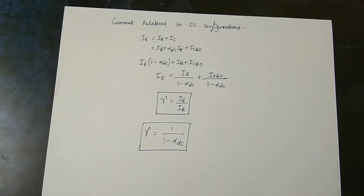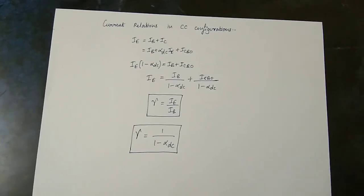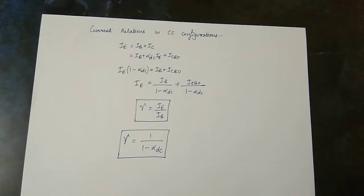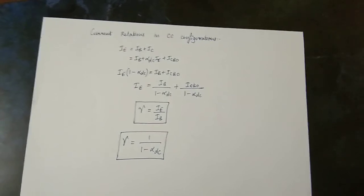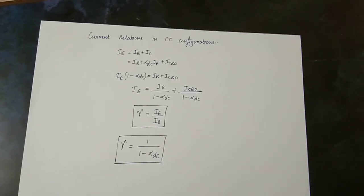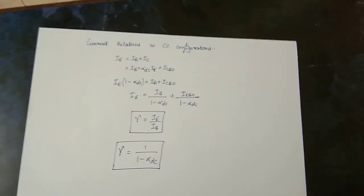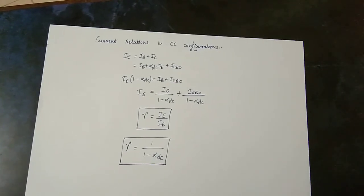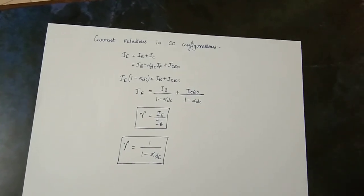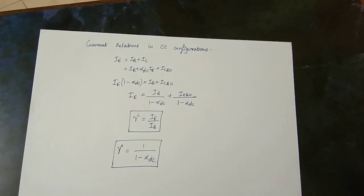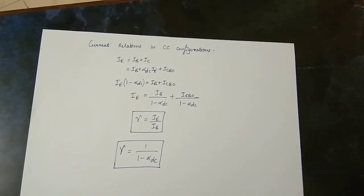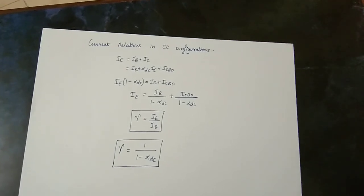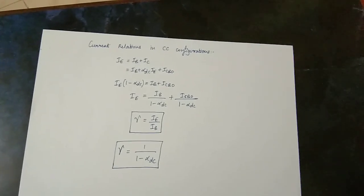That concludes the characteristics analysis of BJT — the Bipolar Junction Transistor. Next, I'm going to talk about the Field Effect Transistor. If you have any doubts, please check the comments below. Thank you for watching.